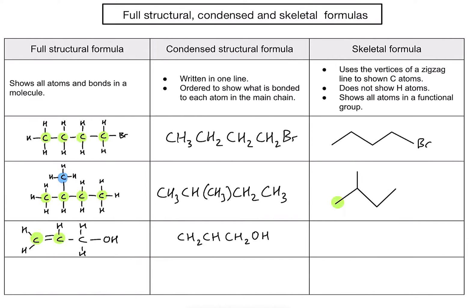Now drawing that as a skeletal formula: I have three carbons in the main chain, so I need three vertices. Sticking off the right-hand side is an OH hydroxyl functional group, so I draw those atoms. I also include the double bond between the first and second carbons, as that's important structural information.